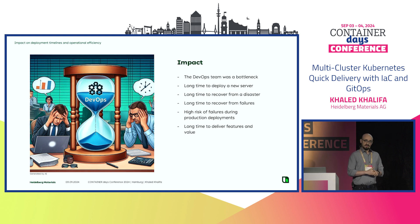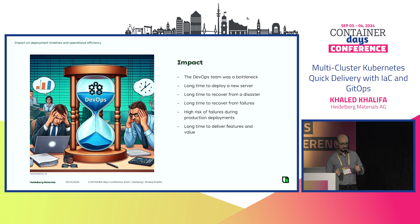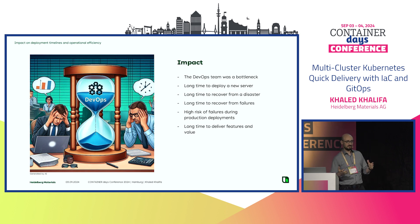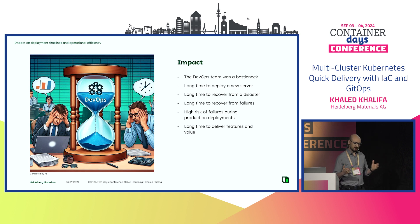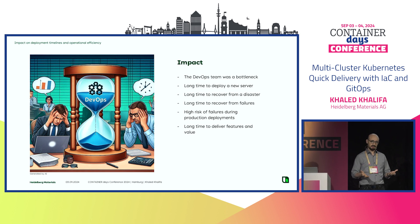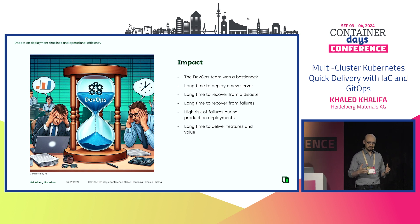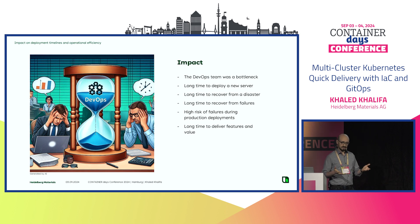The impact was that our DevOps team was a bottleneck everywhere. Delivering things took so much time, and there was always the risk that once some disaster happened, it would take a long time to recover. While making production deployments with many clusters, there's always a statistical risk of having trouble in production due to human intervention. All of this ended up with a long time for delivering features and value.